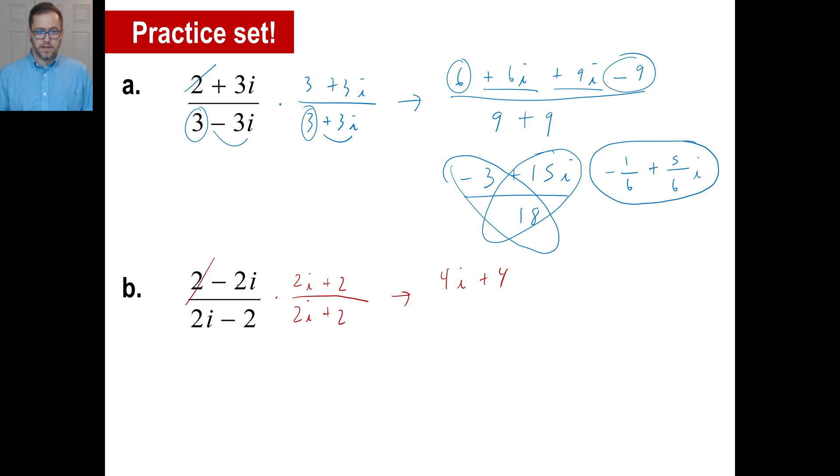Negative 2i times positive 2i is negative 4i squared. Negative 4 times i squared, negative 1, is positive 4. And negative 2i times 2 is negative 4i. There we go. Bottom, remember, just get this times this, and then this times that. So 2i times 2i is 4i squared. 4 times i squared is 4 times negative 1, or negative 4. Negative 2 times positive 2 is negative 4.